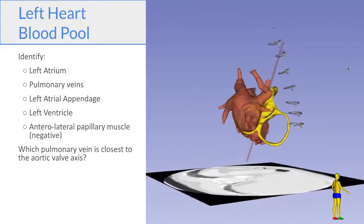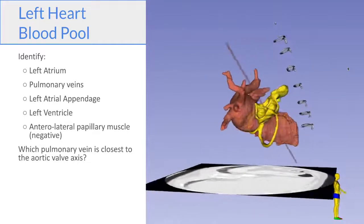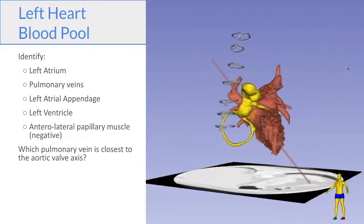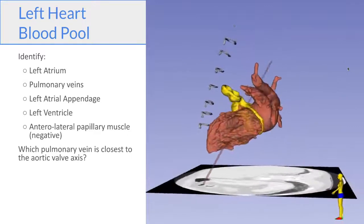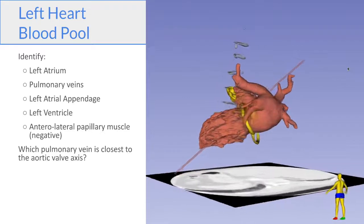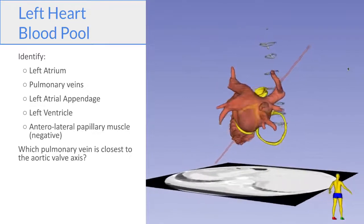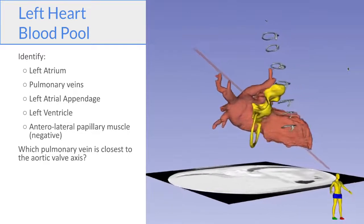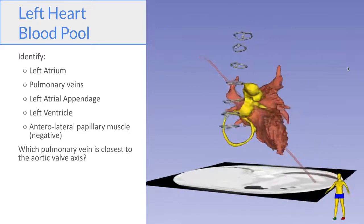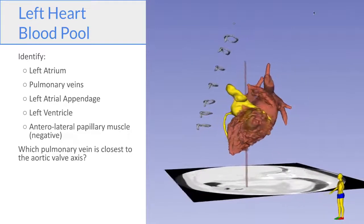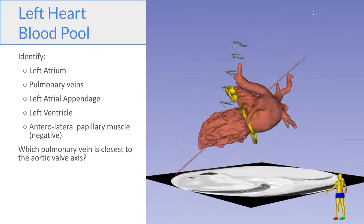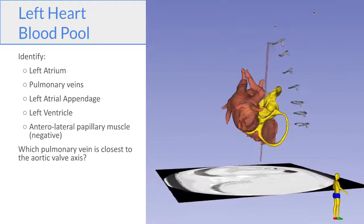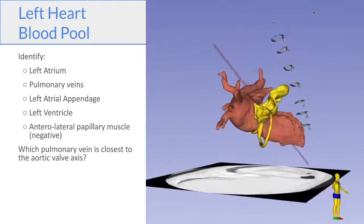Now we start adding all the other cardiac structures. So here we've added the left heart blood pool. So try to identify the left atrium and the pulmonary veins, see if you can identify the left atrial appendage, the left ventricle, and the cavity in the blood pool that corresponds to where the anterolateral papillary muscle would be. And one question is, which pulmonary vein is closest to the aortic valve axis? So you can see the left atrial appendage coming and going out of the view there, and you can see that the right upper pulmonary vein is the one that comes closest to the aortic valve axis.